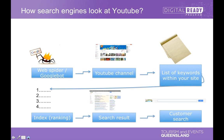When someone does a search for 'Gold Coast accommodation', your videos will go fairly high to the top — and of course the customer will see that. So essentially the words you put on your video and your YouTube channel will help you rank highly in both a YouTube and a Google search.